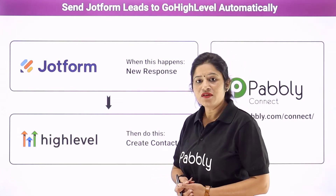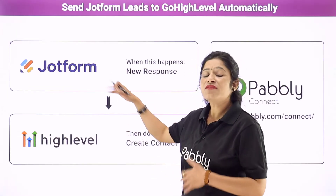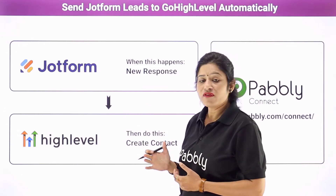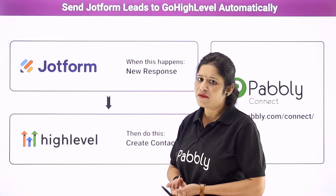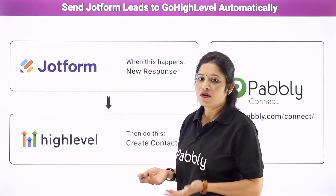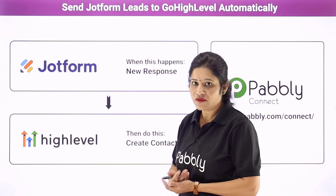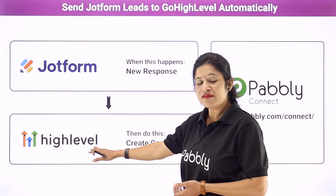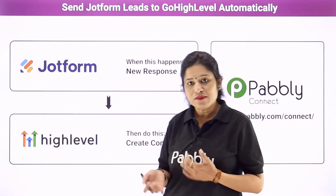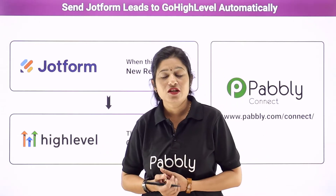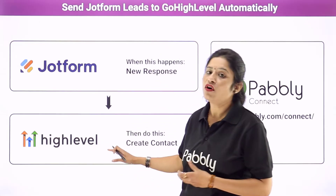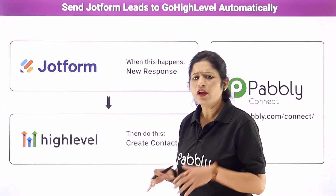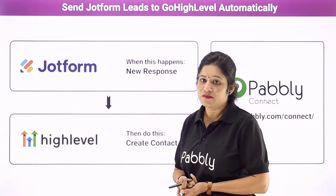In this particular automation we are using JotForm, which is a form building software application. In place of JotForm we can also use Google Forms, Paper Form, Type Form, or any other form building software application. The second application we are using is Go High Level CRM. In place of Go High Level we can also use HubSpot CRM, Zoho CRM, Insightly CRM, or any other CRM software application.